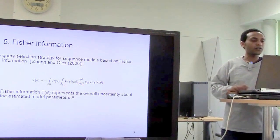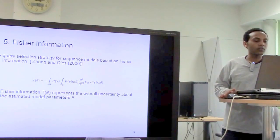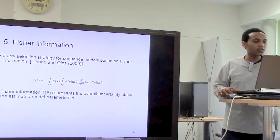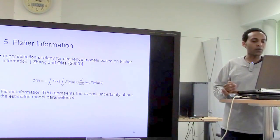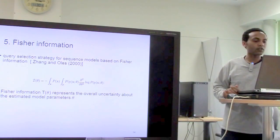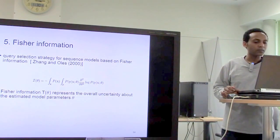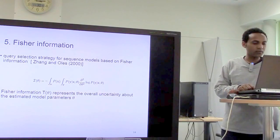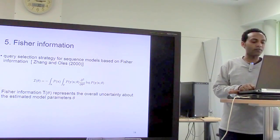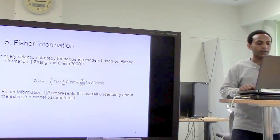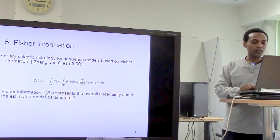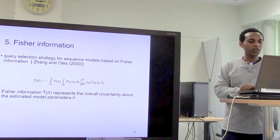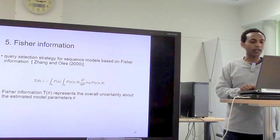There is also another method called Fisher information, which is a query selection strategy for sequence models based on Fisher information, proposed in another paper. These are the methods used to measure the uncertainty or informativeness of the labels to be selected for tagging.